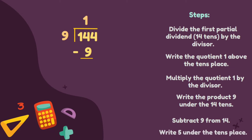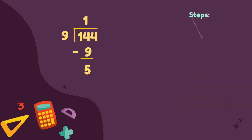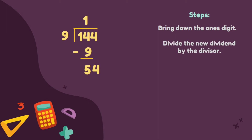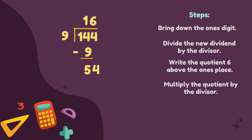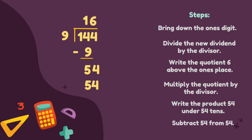Write 5 under the 10th place. Bring down the 1's digit — so we are going to bring down 4. Divide the new dividend by the divisor: 54 divided by 9 is equal to 6. Write the quotient 6 above the 1's place. Multiply the quotient by the divisor: 6 times 9 is equal to 54. Write the product 54 under 54. Subtract 54 from 54: 54 minus 54 is equal to 0.